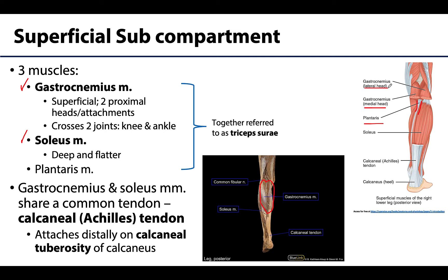The soleus is located deep to the gastrocnemius and does not cross the knee joint. You can see the soleus really well here because the gastrocnemius has been removed; it's notably flatter than the gastrocnemius and can be palpated on either side of the gastrocnemius. The gastrocnemius with its two heads and the soleus are often considered together and may be referred to as the triceps surae — a three-headed muscle when you consider these together.